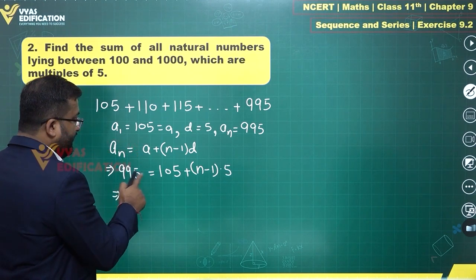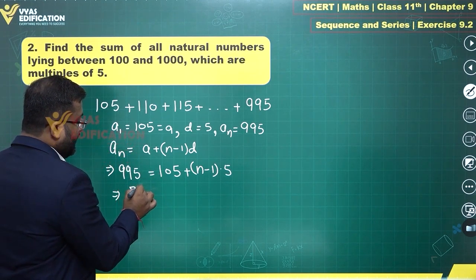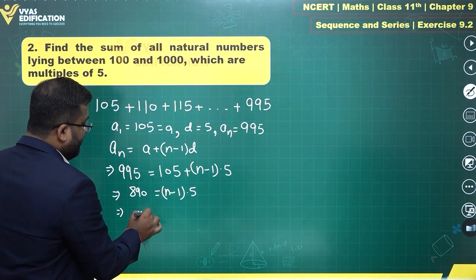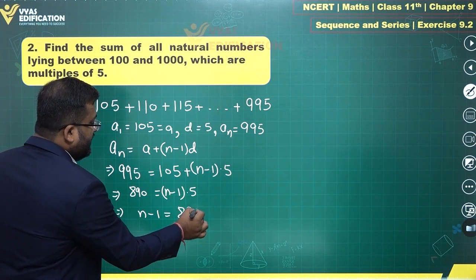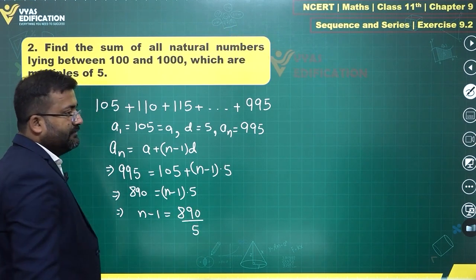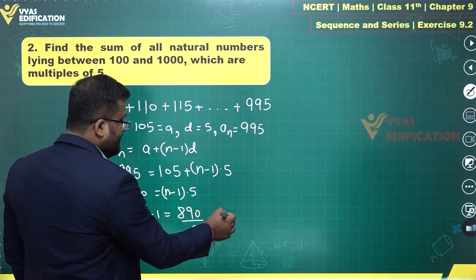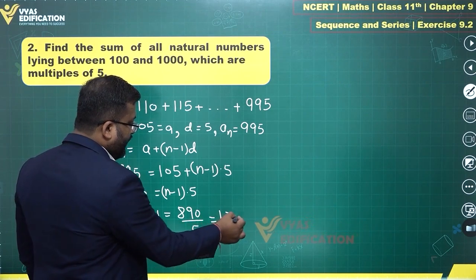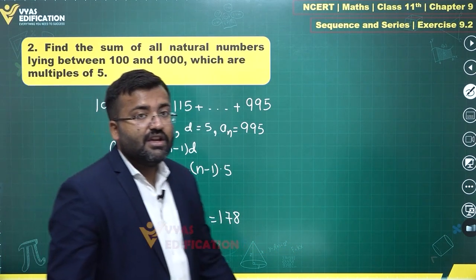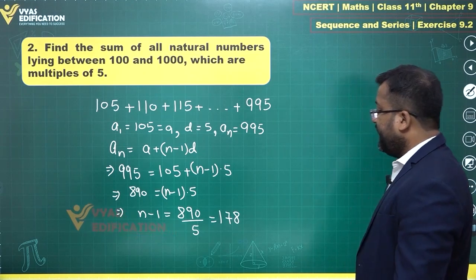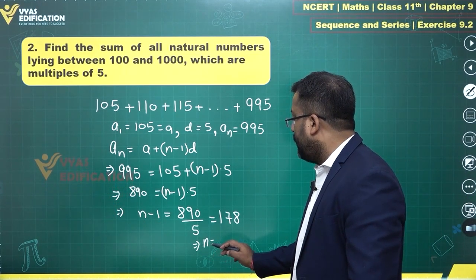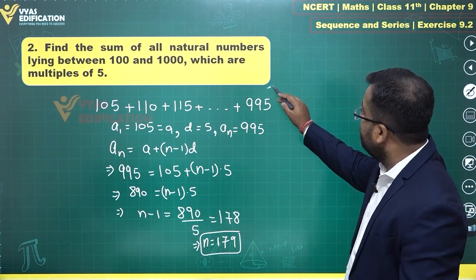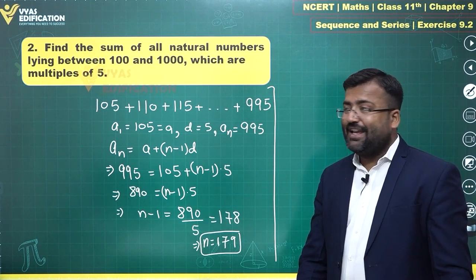105 subtracted over here will be 890. 890 will be N minus 1 times 5. And what is the value of N minus 1? That is 890 divided by 5. This is 178. 89 goes 17 times and 40 goes 8 times, so N minus 1 is 178, which tells me N will be equal to 179.